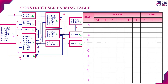Consider state I0. Go-to of I0 on E (a non-terminal) is state I1, so we enter 1 in the go-to part. Go-to of I0 on T is I2, so we enter 2. Go-to of I0 on F is I3, so we enter 3. These are all non-terminal symbols, so the transitions go into the go-to part.